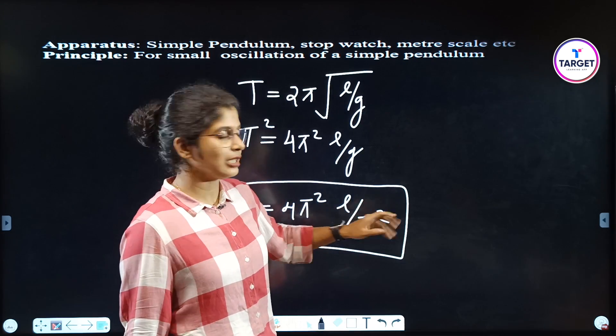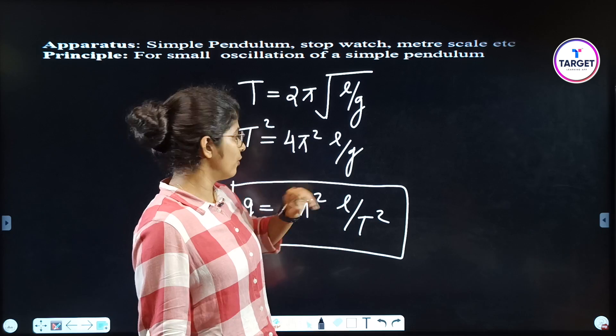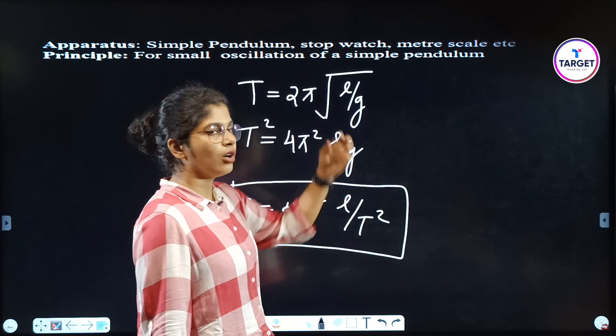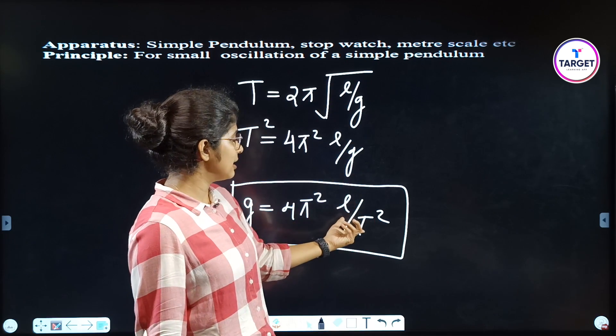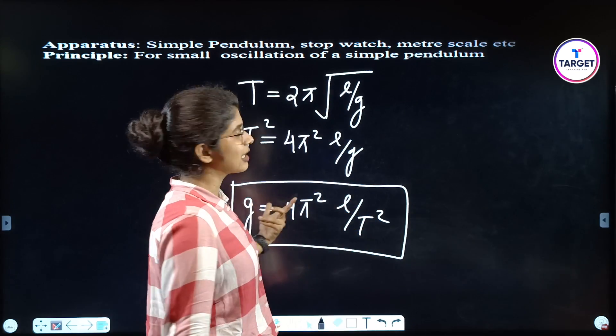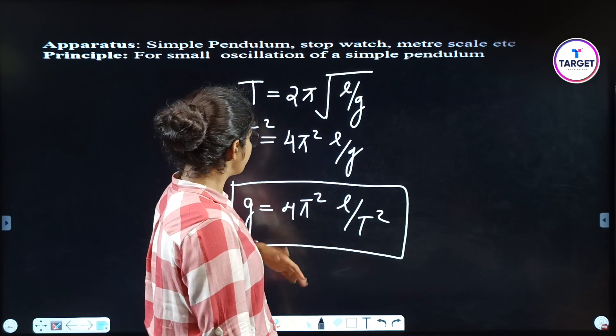You have to specify the variables: L is the length of the thread, T is the time period, and g is the acceleration due to gravity.